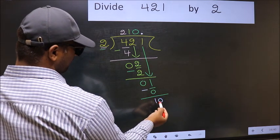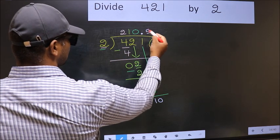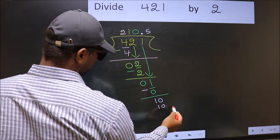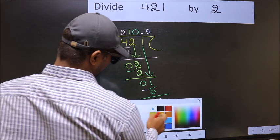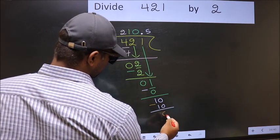So 10. When do we get 10 in 2 table? 2 times 5 is 10. Now you subtract. 10 minus 10, 0.